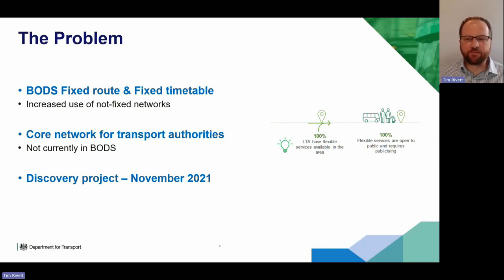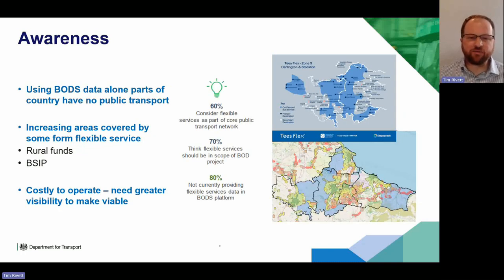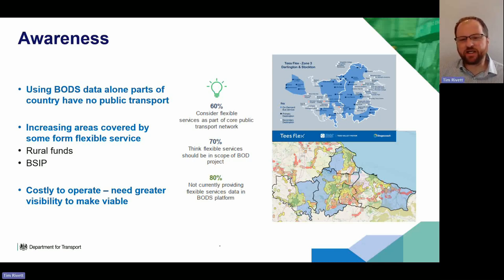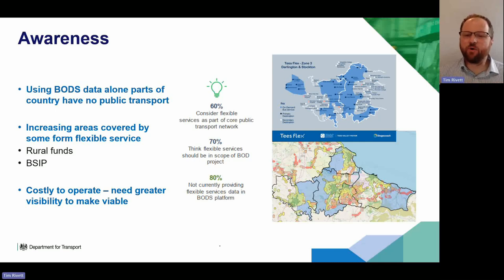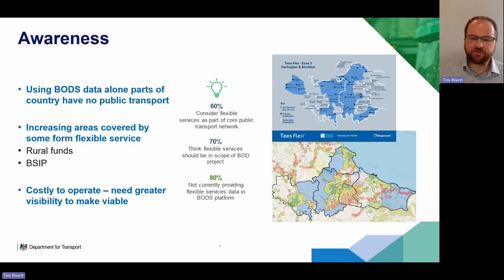A couple of years ago KPMG carried out a discovery project to scope the requirements and look at whether flexible services should be available in BODS. The outcome was that yes, absolutely they should, because if you take the BODS data as it currently stands and put it into a journey planner, quite a lot of the country would look as though it had no public transport when in fact it did. Rural funding and bus service improvement plans are resulting in more and more of these services appearing, and we need people to be using them because if they're not, they can be quite expensive to run.